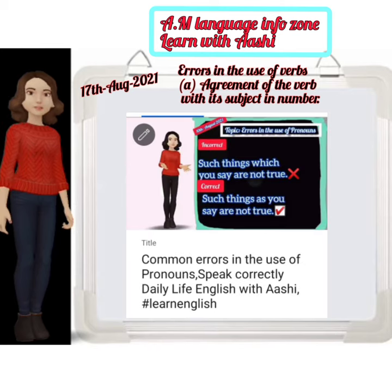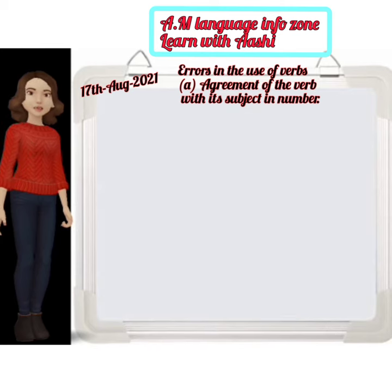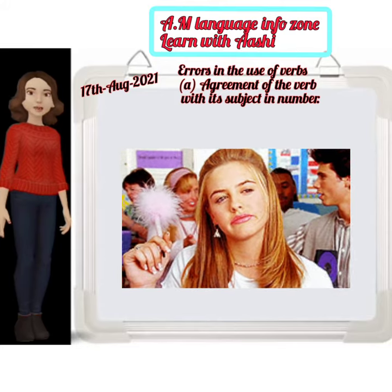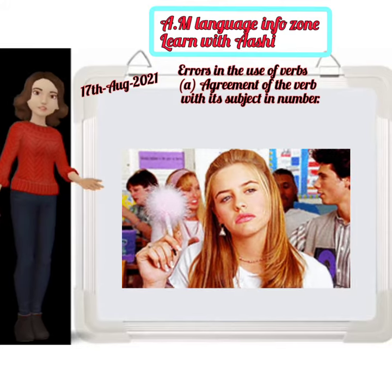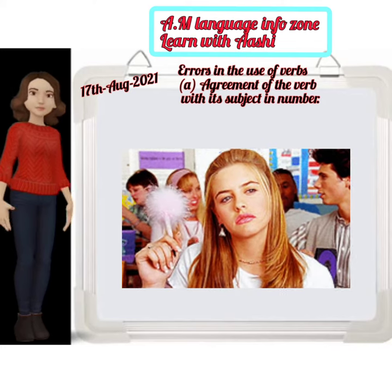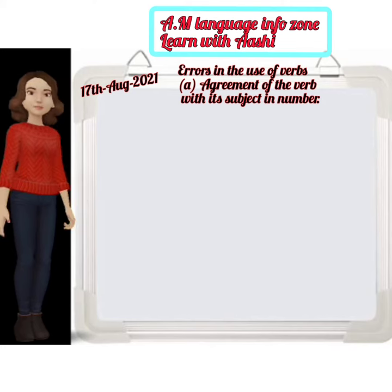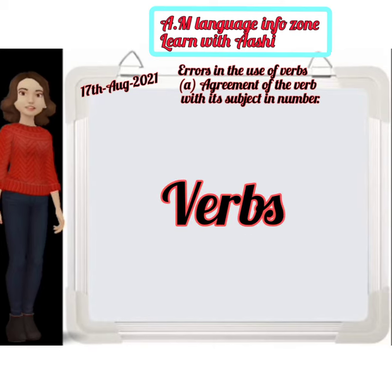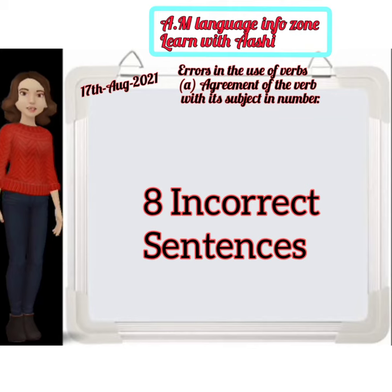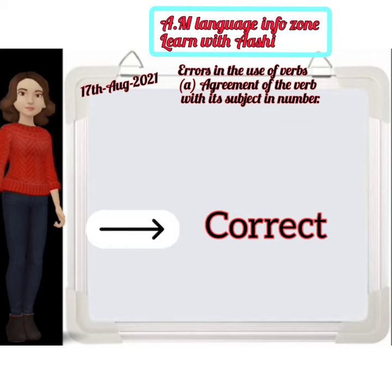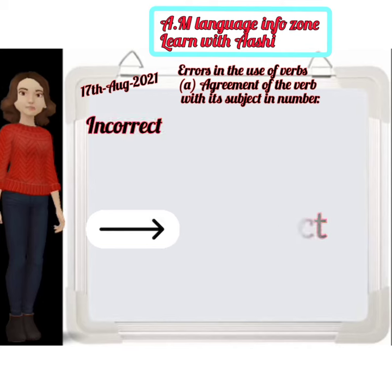Now it's the third part — part three video — agreement of the verb with its subject in number. So our focus is on verbs. We will now learn eight sentences which are incorrect and we will correct them. So let's get started.